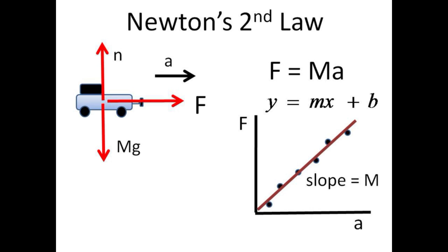We will substitute different accelerating weights to change the acceleration and then measure the force tension in the string with the onboard force sensor. A plot of force versus acceleration should be a straight line with a slope equal to the combined mass of the cart and its load of force sensor.